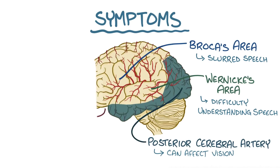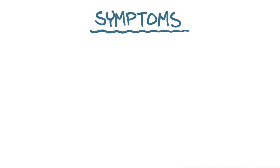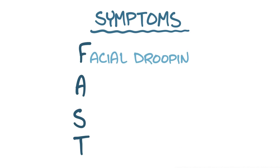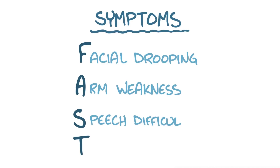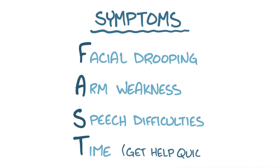An acronym to remember some common stroke symptoms is FAST: Facial drooping, Arm weakness, Speech difficulties, and Time. Time is obviously not a symptom, but just a reminder to get help as quickly as possible to minimize cell injury and maximize the chance of a full recovery.